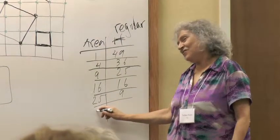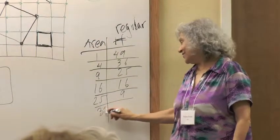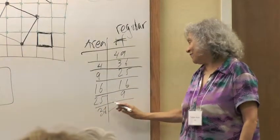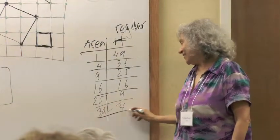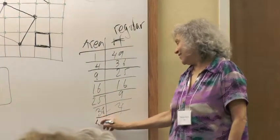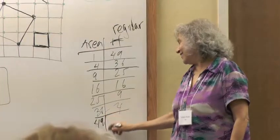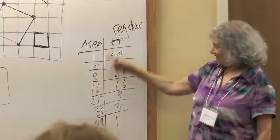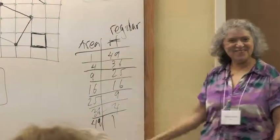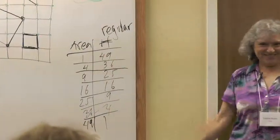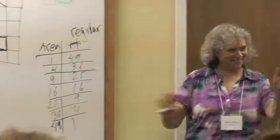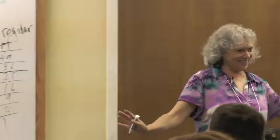And then six by six, thirty-six, and there are four. And then forty-nine: one. It's kind of nice and symmetric.